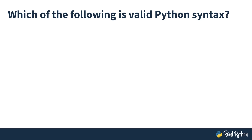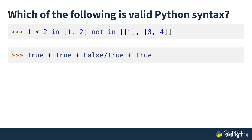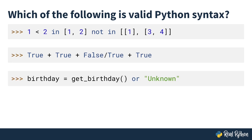Which of the following is valid Python syntax? Say, this jumbled mess of various conditional statements — one less than two in the list one, two, and so on. Or this awkward-looking expression involving true and false values with mathematical operators? Or set birthday equal to get birthday or unknown. If you're unsure which of these is valid Python syntax, or how the first few if statements could be improved, then maybe you need to take a closer look at Python's built-in Boolean data type and how to take advantage of Python's implementation of the various comparison and Boolean operators.